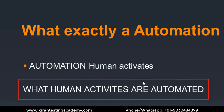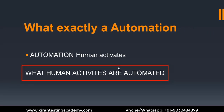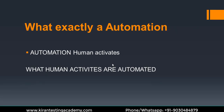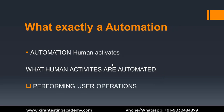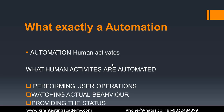Three human activities are generally automated: one, performing the user operations; two, watching the actual behavior of the application; and three, providing the status. These are the three things that are automated. Let's discuss these in more detail.